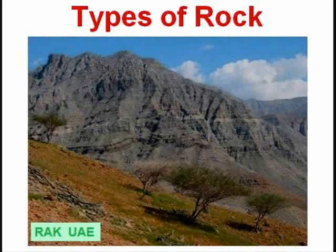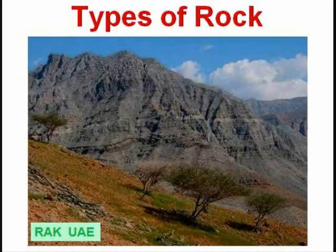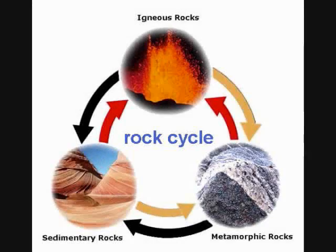We have looked at the theory of how the earth was formed. Now we're going to discuss the theory of how petroleum is made and accumulated. In this lecture, we are going to talk about types of rocks. In the rock cycle, we have three classifications of rock: igneous, sedimentary, and metamorphic.